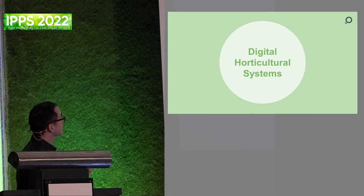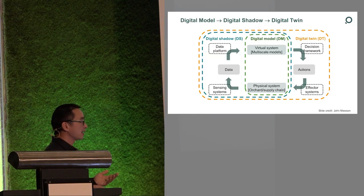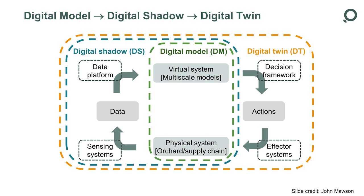In this system we have six main components. First, we have the physical system component, then we have the sensing system, the data platform, the virtual system, the decision framework, and the effector system acting on the physical system. In this work, the physical system and the virtual system are very connected — everything is connected — and we acknowledge that everything is changing, so we pay close attention to changes through the sensing system.